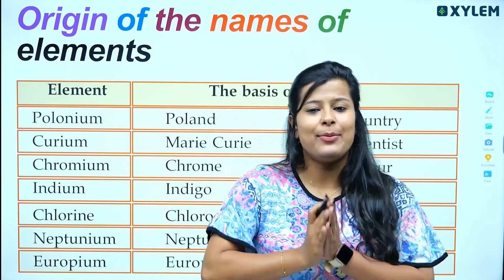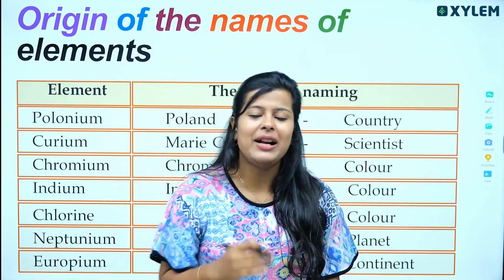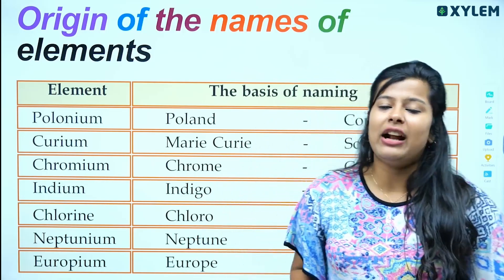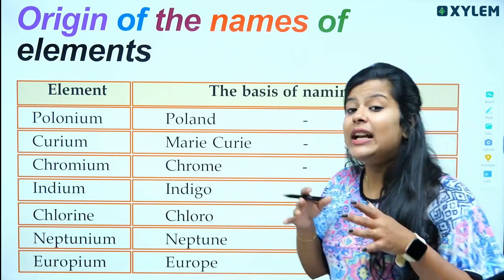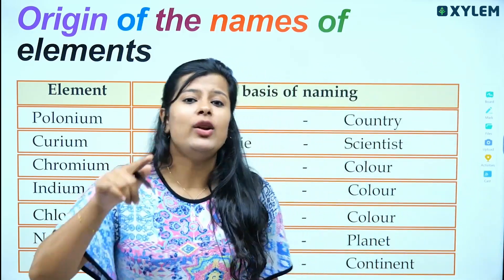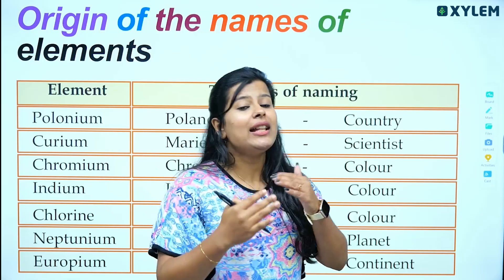What kind of elements are in our periodic table? How many elements do we have? We have one hundred and eighteen elements. So what is the name of these one hundred and eighteen elements?